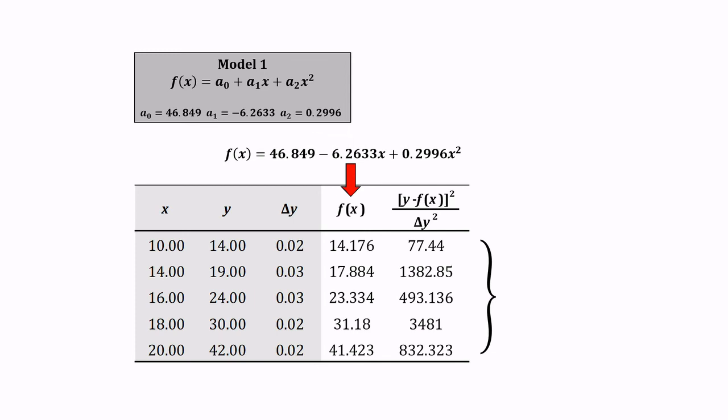Here, the chi squared value produced by model 1 is 6,266.6. Note that the degree of freedom is equal to 2, then the value of chi squared min equals 0.103, and the value of chi squared max equals 5.991.